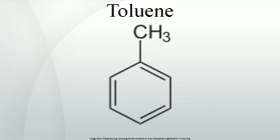Its IUPAC systematic name is methylbenzene. It is an aromatic hydrocarbon that is widely used as an industrial feedstock and as a solvent. Like other solvents, toluene is sometimes also used as an inhalant drug for its intoxicating properties. However, inhaling toluene has potential to cause severe neurological harm.